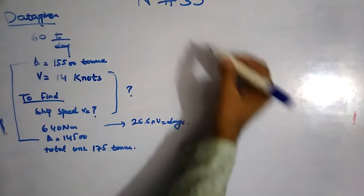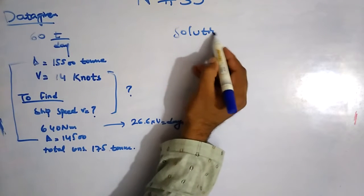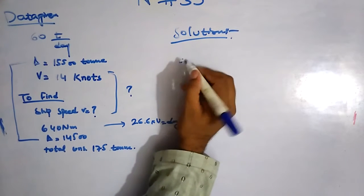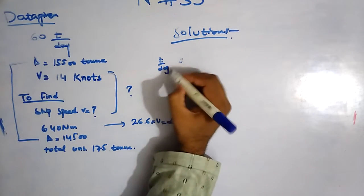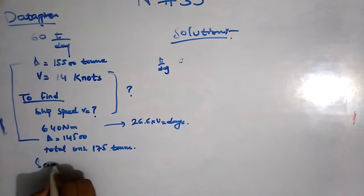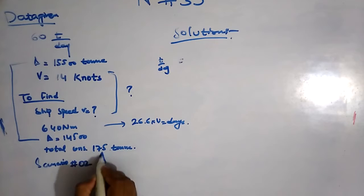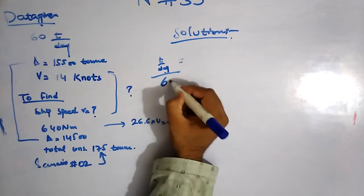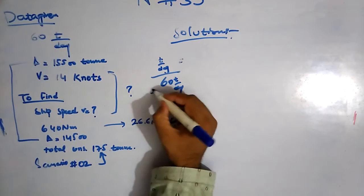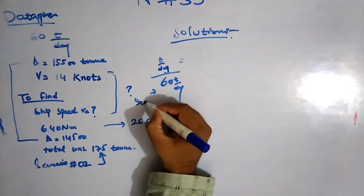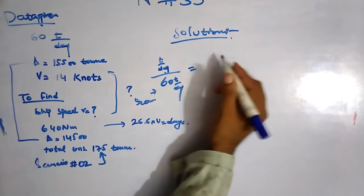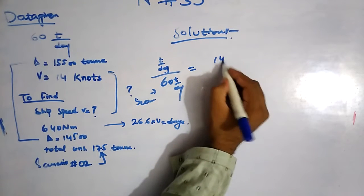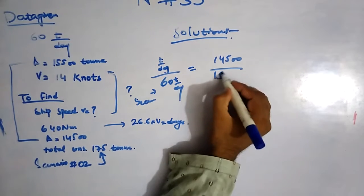Now I am going for the solution. How we can find tons per day for this scenario number two? Tons per day, we have previously 60 tons per day. This is the case one or scenario one. 60 tons per day is equal to, we have 14,500 divided by 15,500.